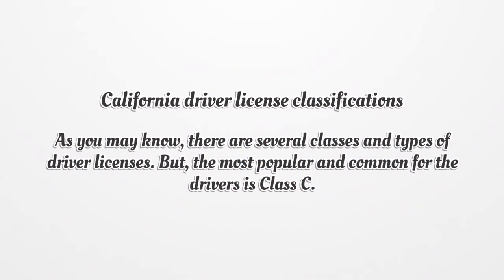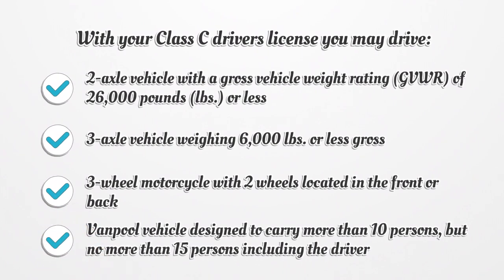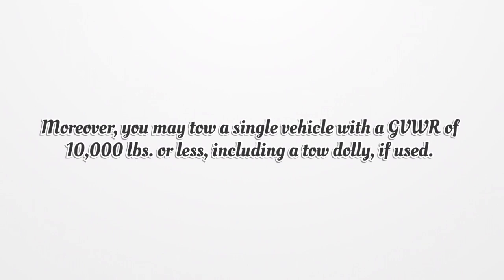California Driver License Classifications. There are several classes and types of driver licenses. The most popular and common for drivers is Class C. With your Class C driver's license you may drive: a two-axle vehicle with a gross vehicle weight rating of 26,000 pounds or less; a three-axle vehicle weighing 6,000 pounds or less gross; a three-wheel motorcycle with two wheels located in the front or back; and a vanpool vehicle designed to carry more than 10 persons but no more than 15 persons including the driver. You may also tow a single vehicle with a GVWR of 10,000 pounds or less, including a tow dolly if used.